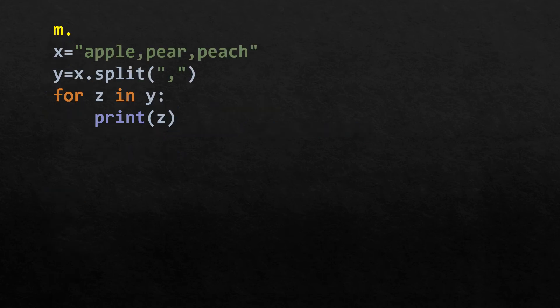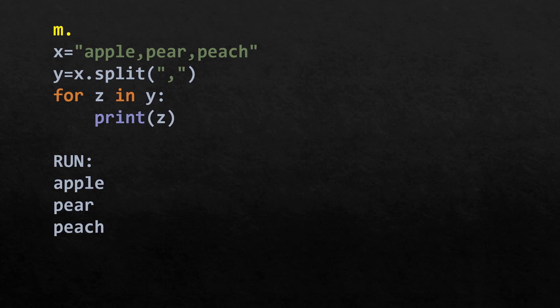x is a string containing 'apple,pear,peach'. Using the split function splitting by comma, x is split and stored in y. Then for z in y, it prints z. So it prints apple, pear, and peach.